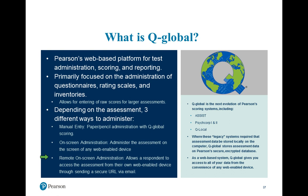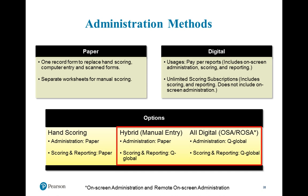This slide really shows us the spectrum of what Q-Global covers. We understand that each assessment session is unique and requires a range of administration and scoring options. With Q-Global, you now have three different ways to administer and score your assessments: the traditional paper administration and scoring, a hybrid administration using the manual entry method, and completely digital with on-screen administration and remote on-screen administration. You now have the ability to administer assessments in a manner that is efficient and convenient for you, but also accessible for your examinee or respondent.